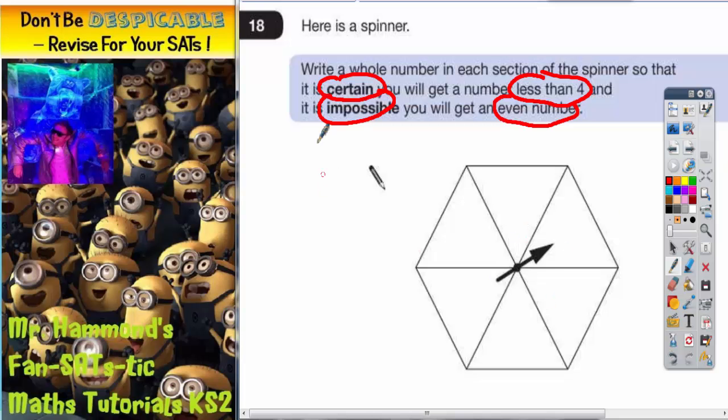So certain that you'll get a number less than four. What are the numbers less than four? We have three, two, one, zero. We could go into negative numbers but let's keep it simple: three, two, one, zero. Less than four. We can't include four because four isn't less than four, so we can't include four.